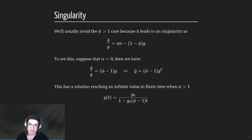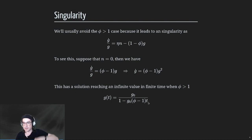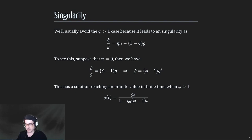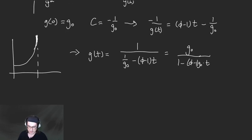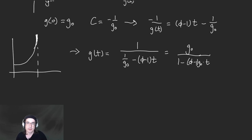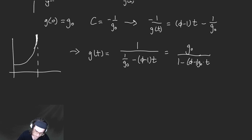The general statement doesn't hold, but in this case if you integrate it - the growth rate is equal to this function which is asymptoting up to infinity at a time T of one over G-zero times one over phi minus one, where that numerator term hits zero. G is A-dot over A rate. So we can integrate both sides with respect to T to get log of A of T.